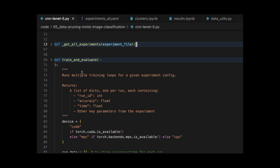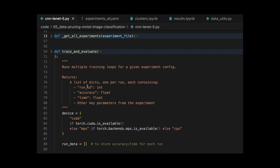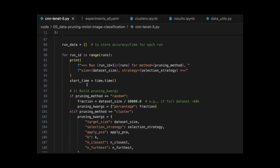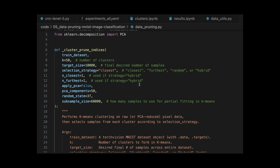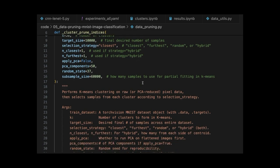And so for each one of these experiments, what I did was sample from the data set based on the pruning strategy, and then take that subset of the full training data set in MNIST and pass that to our train loop to train the model. And so this was a custom data loader I created here that would implement the different pruning strategies. And basically it was just returning indices into the full training data set of what to keep.